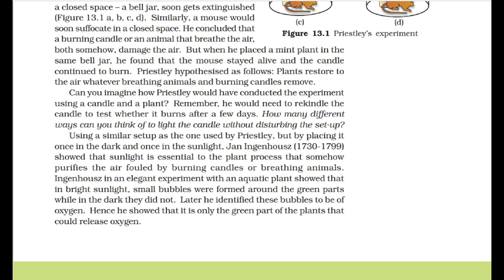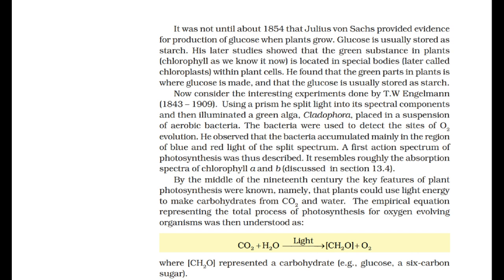Ingenhaus showed that it is only the green part of the plants that could release oxygen. It was not until about 1854 that Julius von Sachs provided evidence for the production of glucose when plants grow. Glucose is usually stored as starch. His studies showed that chlorophyll, located in special bodies called chloroplasts within plant cells, is where glucose is made and stored as starch.